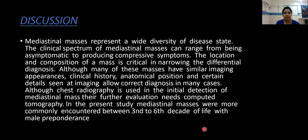Discussion: mediastinal masses represent a wide diversity of disease states, and their clinical spectrum can range from being asymptomatic to producing compressive symptoms. Location and composition of a mass is critical in narrowing the differential diagnosis. Although many masses have similar imaging appearances, clinical history, anatomical position, and specific imaging details allow correct diagnosis in many cases. Although chest radiography is used for initial detection, further evaluation requires CT. In the present study, mediastinal masses were more commonly encountered between the 3rd to 6th decade of life with male preponderance.